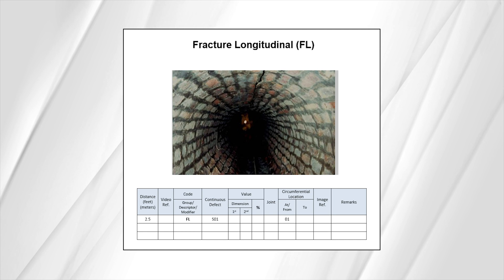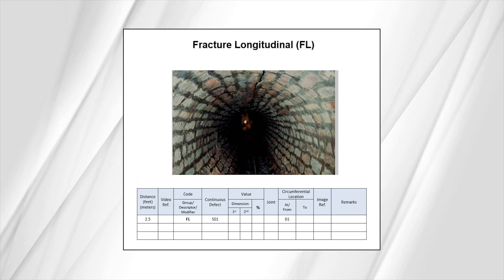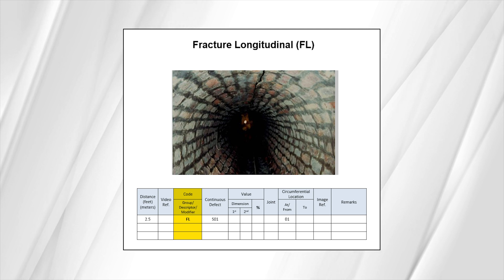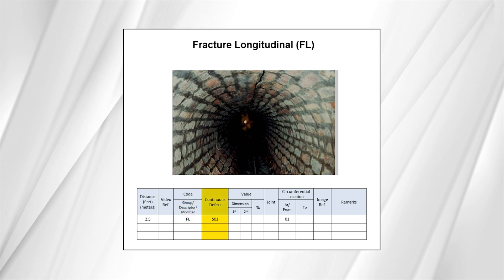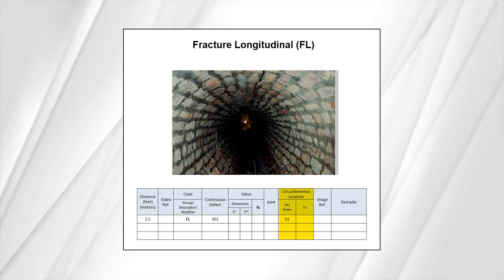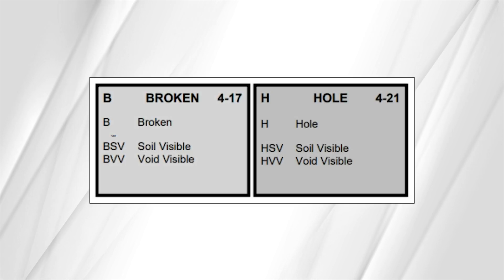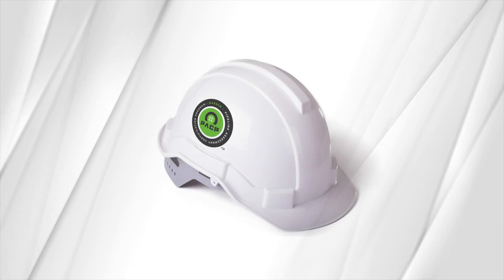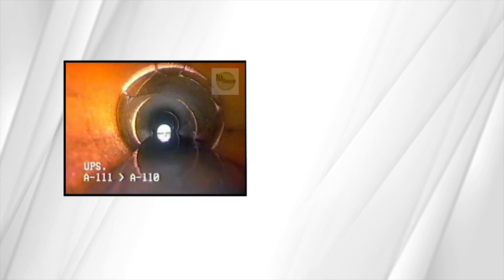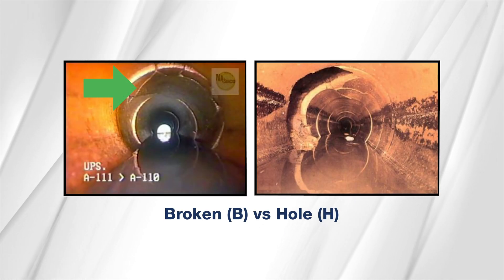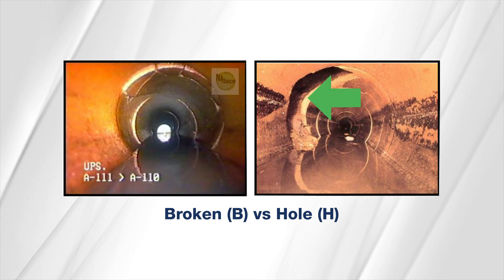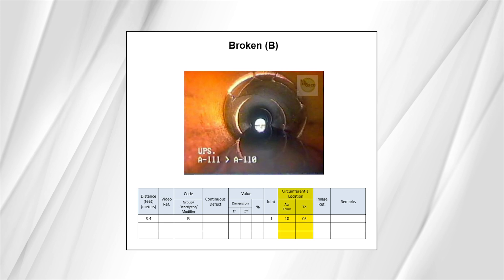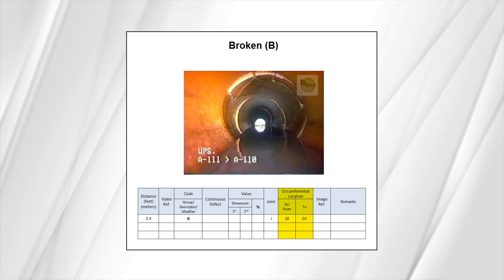Let's take a deeper look at coding a fracture. In this particular case, we need to add a descriptor, the letter L, to the code, because this fracture is longitudinal, which is parallel to the direction of flow, or FL. It's marked as continuous because it extends for a specified distance and is located at 1 o'clock. Next up, broken or whole. Broken, or the letter B, is used when pieces are noticeably displaced, while whole, or the letter H, is used when the pipe material is clearly missing. In this example, the pipe is broken at a joint from 10 to 3, with pieces displaced from their original position.